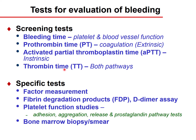Thrombin time is used to measure both pathways as it is a common pathway test — specifically the fibrinogen-to-fibrin conversion. Specific tests include factor measurements, fibrin degradation products (FDP), and the D-dimer assay, which measures stable clot formation and fibrinolytic processes.